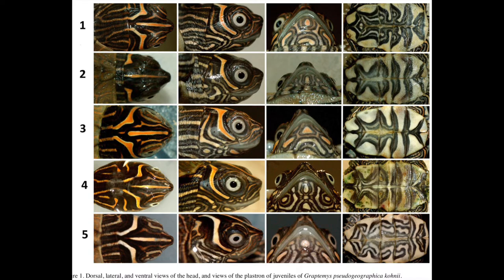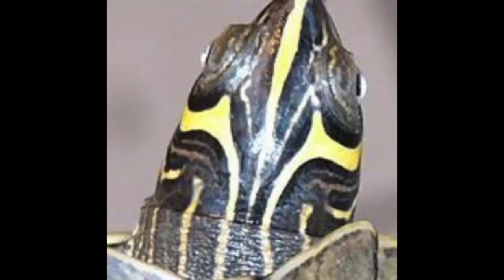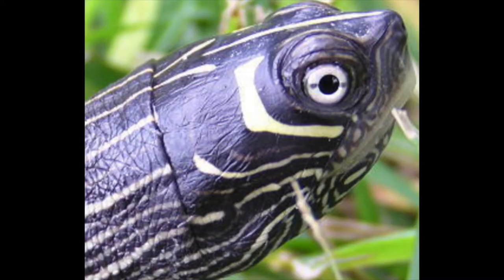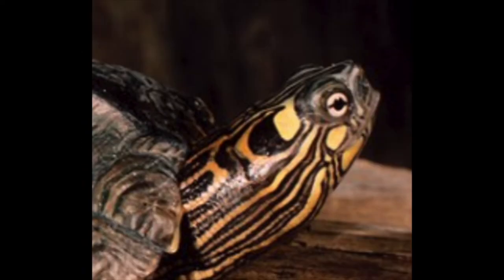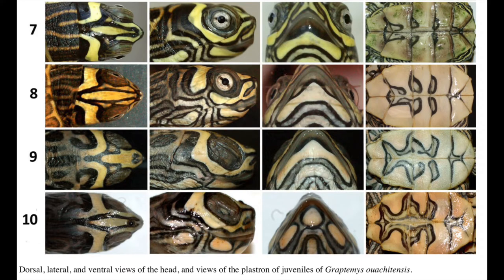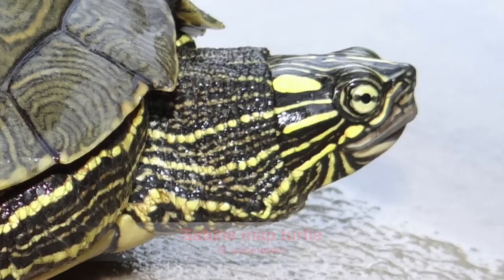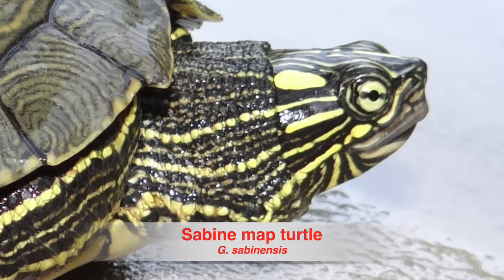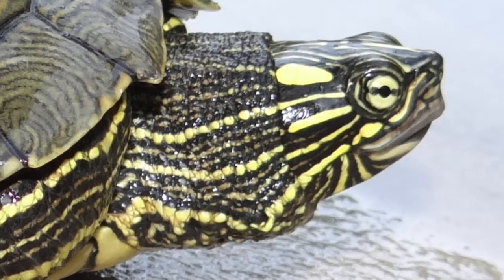The Mississippi map turtle is easily identified by its crescent shaped markings behind each eye. It has white eyes and a white mouth. It closely resembles the Sabine map turtle, however with some obvious differences which we'll talk about later.